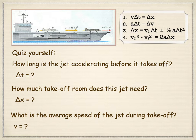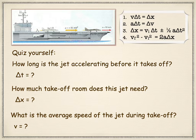Now that we've calculated delta x and delta t, we can use kinematic equation one to find the average speed. With constant acceleration and two given velocities — initial and final — we can simply take the average: add the two velocities and divide by two. Both methods should give the same answer.